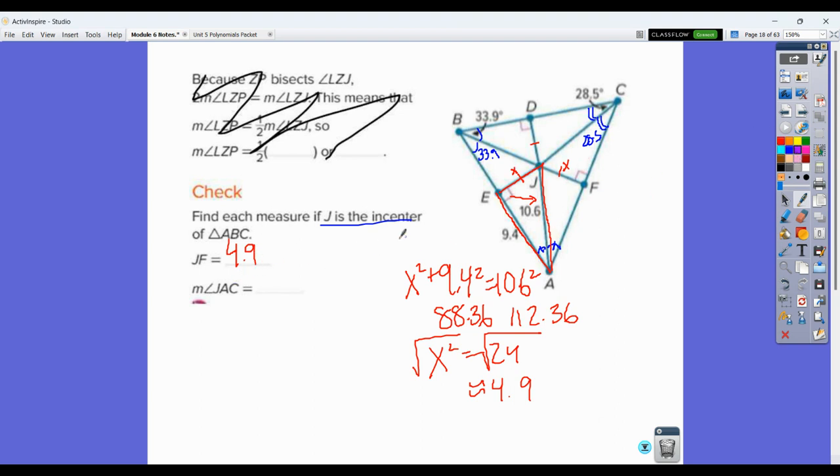Measure of angle JAC. So I'm going to find JAC, this angle right here. I'm going to throw a Y in there. But what we do know is that if you follow the large triangle here, remember the angles of a triangle add up to 180. So angle B over here, the large angle B over here, is 33.9 times 2, which is 67.8. The large angle C over here is double to 28.5, which is 57.